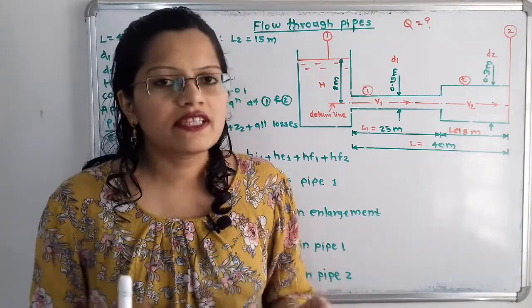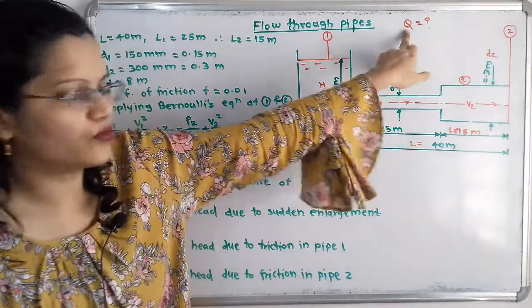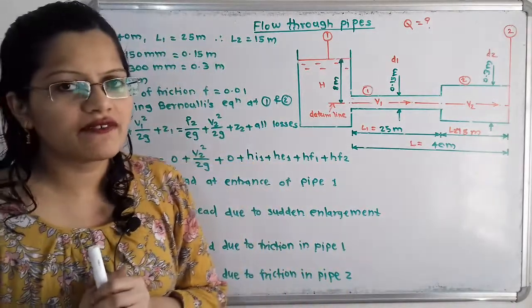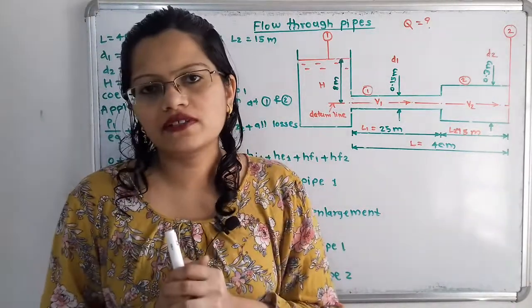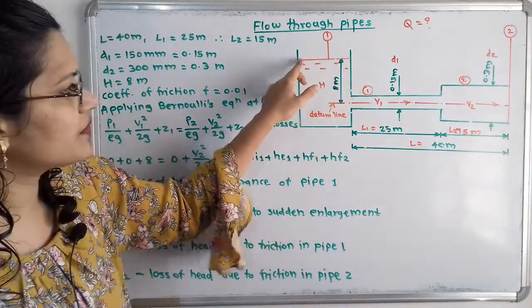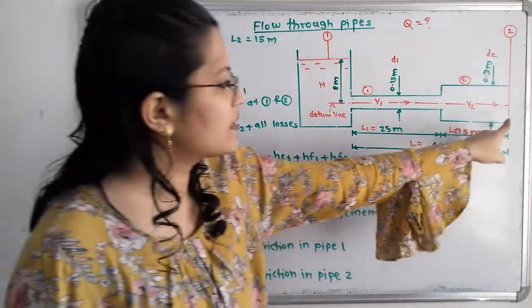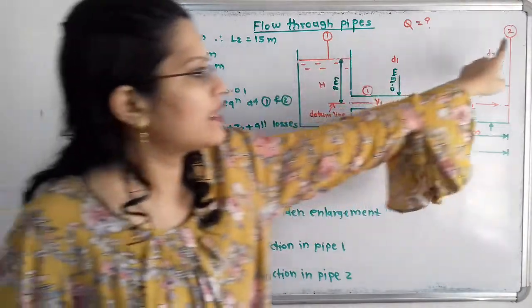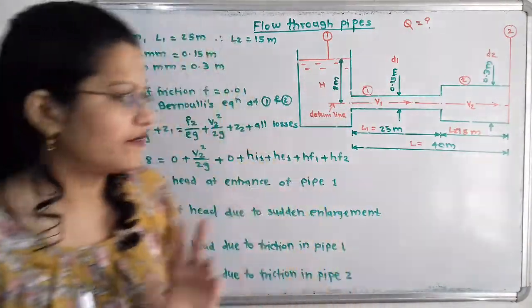We apply Bernoulli's equation because we need to find the rate of flow Q. Section 1 is taken above the water surface in the tank, and section 2 is taken at the outlet of the pipe. We will now apply Bernoulli's equation between these two sections.